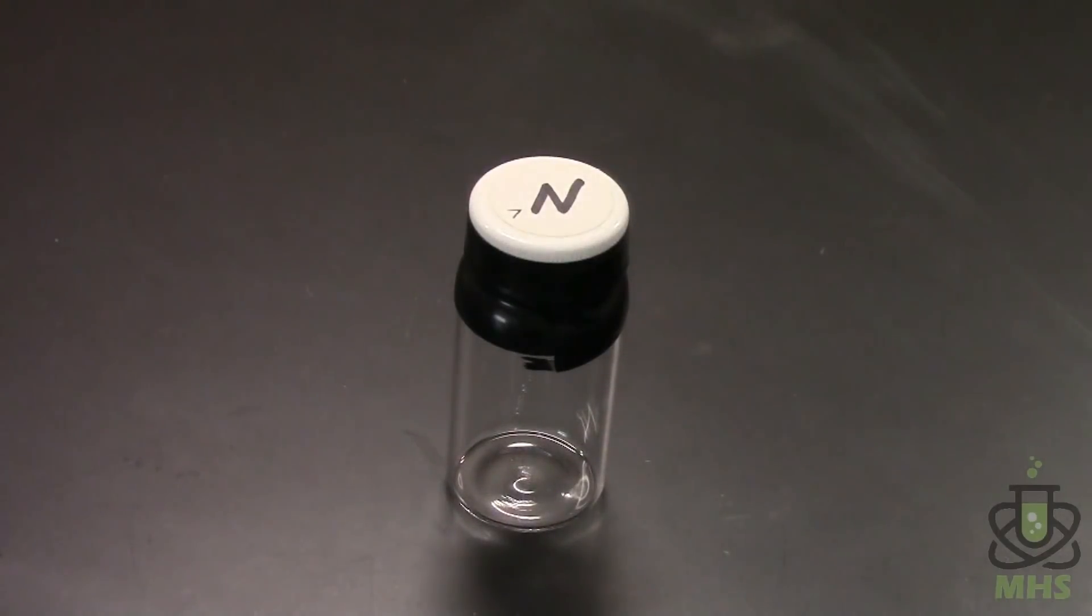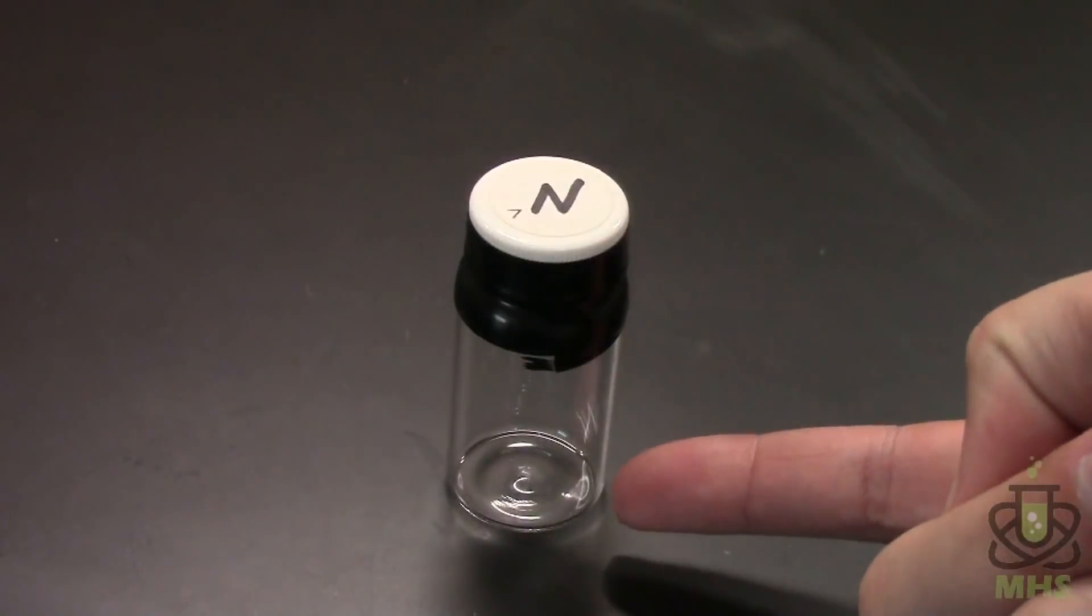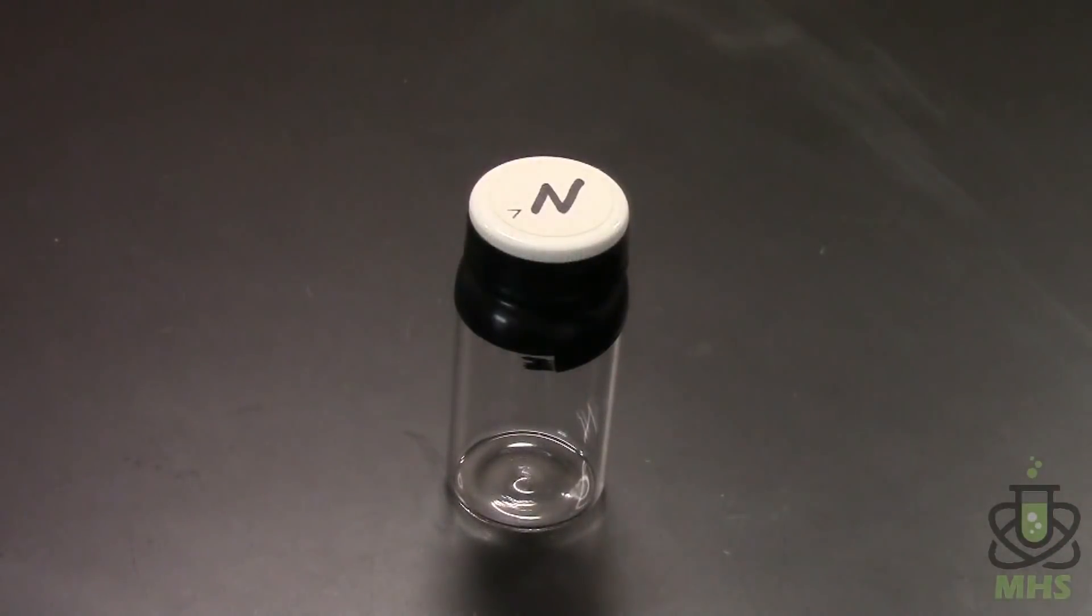Alright well this is my actual sample of nitrogen and it doesn't really look like much of course because it's clear and colorless but it is full of nitrogen and the way I made it was with liquid nitrogen. What I did was I filled this vial up with the liquid and allowed it to boil off so that displaced all the regular air and we're left with just nitrogen in there and so then I capped it and put some tape around it to seal it.